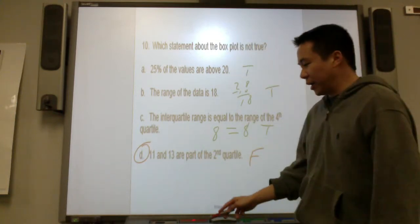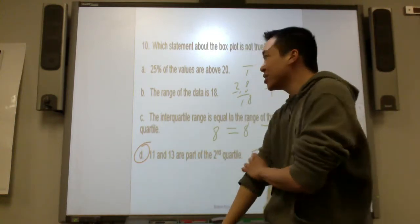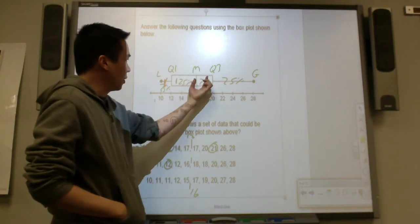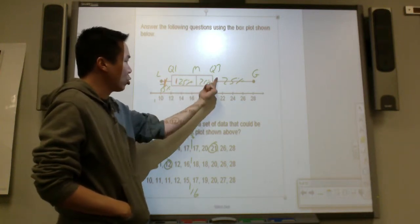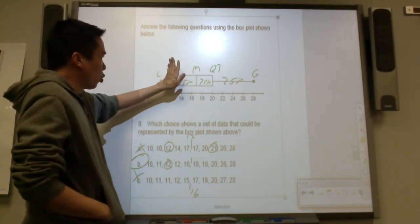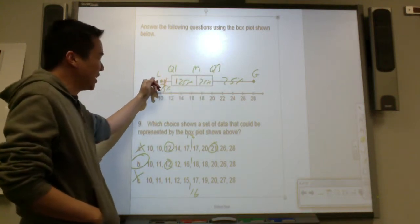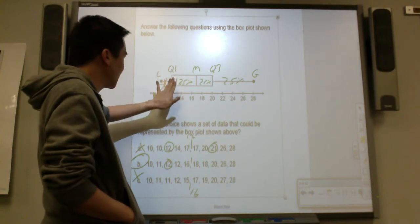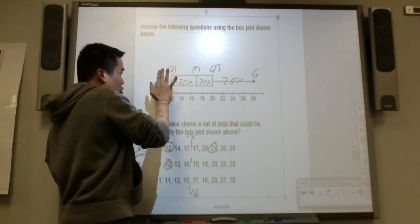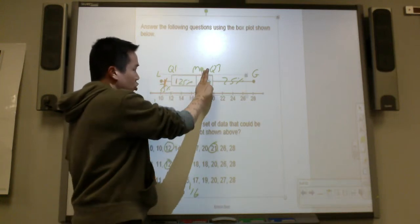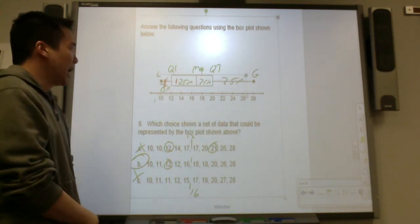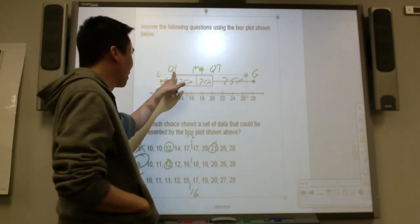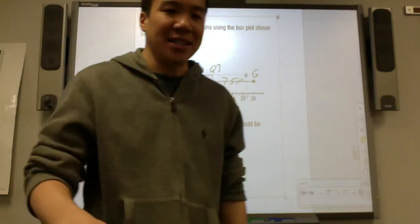So what we mostly talked about here is how to interpret a box plot. Given a box plot, you can find the median — it's that line in the center between quartile 1 and quartile 3. Inside the box you have quartile 1, the median, and quartile 3. Then you have the least and greatest on either end. 25% of the data are between each cut. From this you can find the interquartile range — that is quartile 3 minus quartile 1.